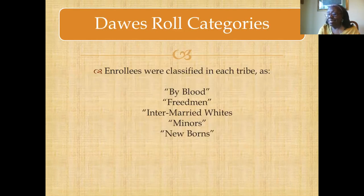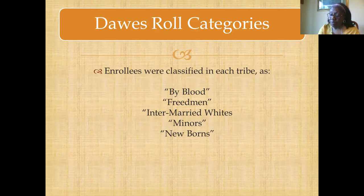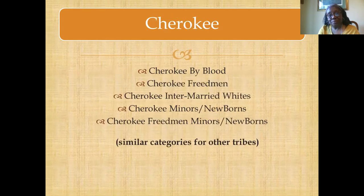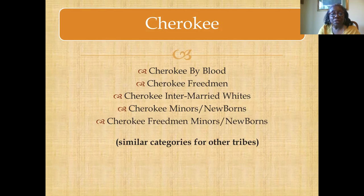They were classified in every single one of those five tribes as either citizens by blood, citizens who were freedmen, those who were intermarried whites, those who were minors, and those who were newborns. Thus, if you take the Cherokee Nation, for example, you had Cherokee by blood, Cherokee freedmen, Cherokee intermarried whites, Cherokee minors and newborns, Cherokee freedmen minors, and Cherokee freedmen newborns. There were similar categories for the other tribes — Choctaw by blood, Choctaw freedmen, Choctaw intermarried whites, and so on.